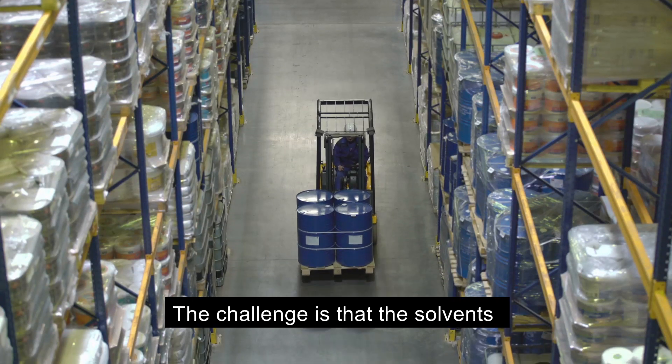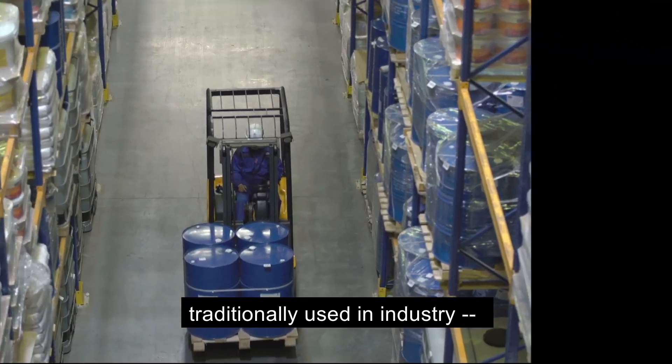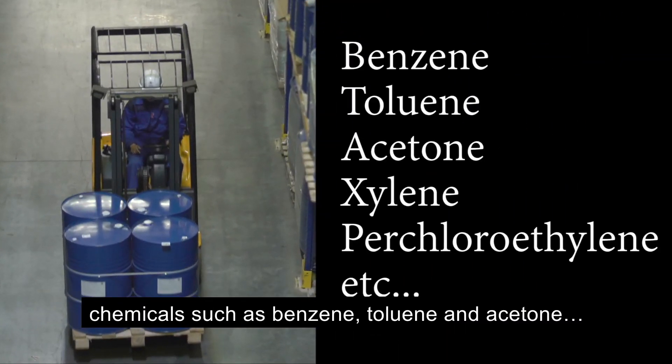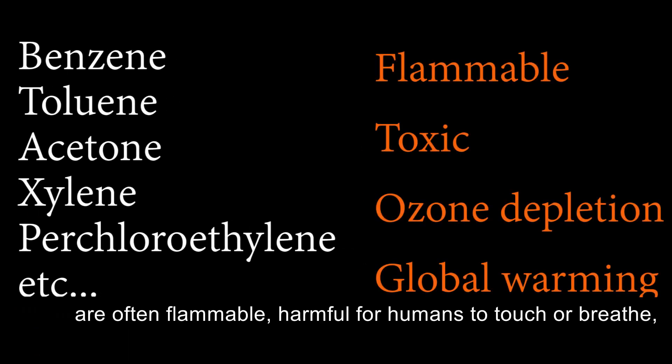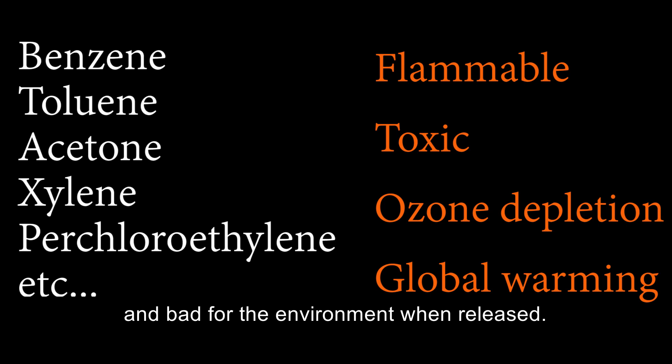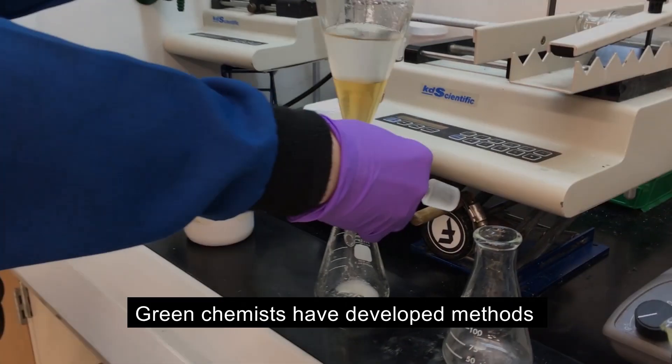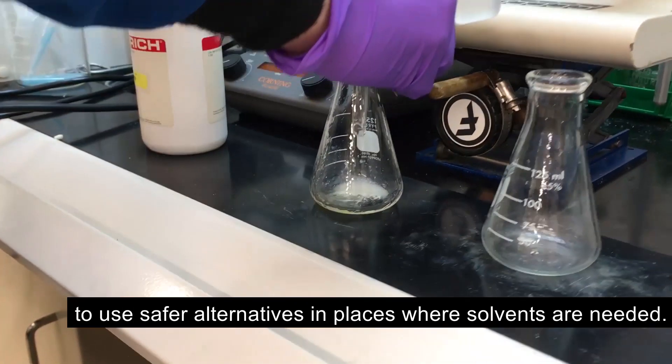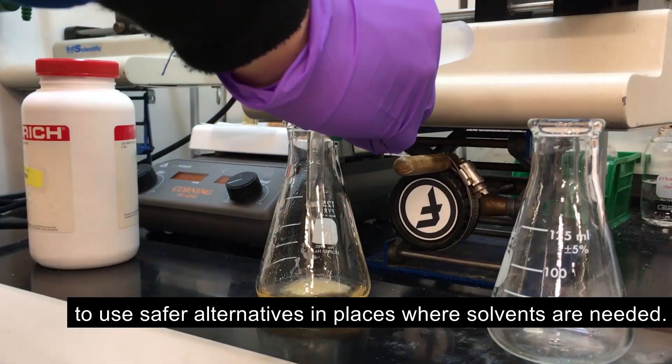The challenge is that the solvents traditionally used in industry, chemicals such as benzene, toluene, and acetone, are often flammable, harmful for humans to touch or breathe, and bad for the environment when released. Green chemists have developed methods to use safer alternatives in places where solvents are needed.